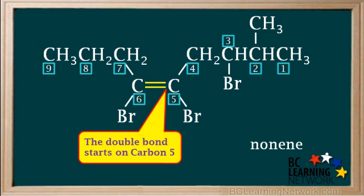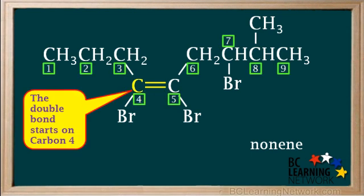The IUPAC rule is that carbon atoms must be numbered in such a way that the carbon which the double bond starts on has the lowest number. Remember, in alkenes, this rule takes a higher priority than numbering the carbon atoms with the groups attached. Therefore, we must number the carbon atoms starting from the left.